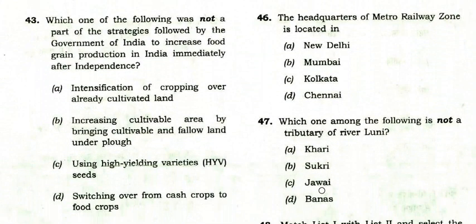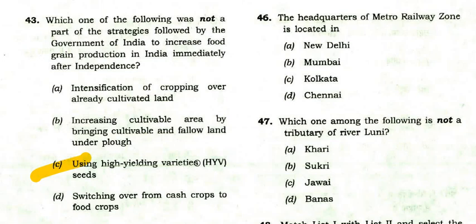Which was not a strategy followed by the Government of India to increase food grain production immediately after independence? The right option is C: using high-yielding variety seeds. This was not followed immediately after independence — it was followed later during the Green Revolution.